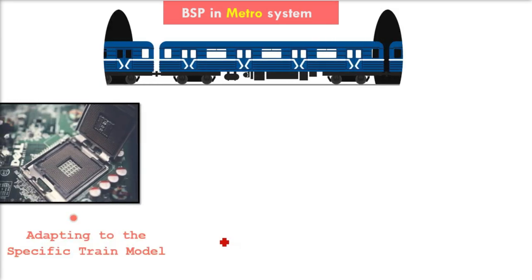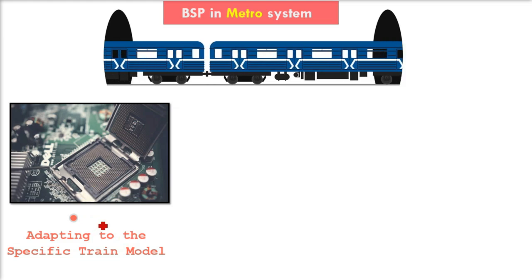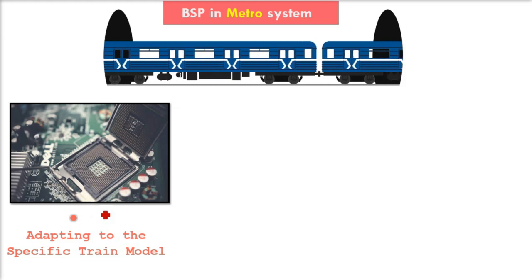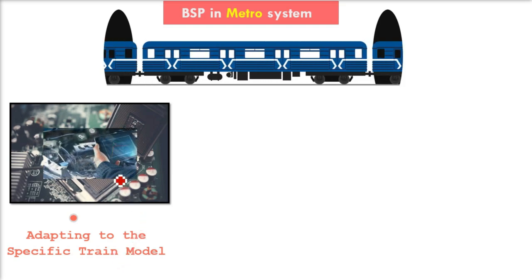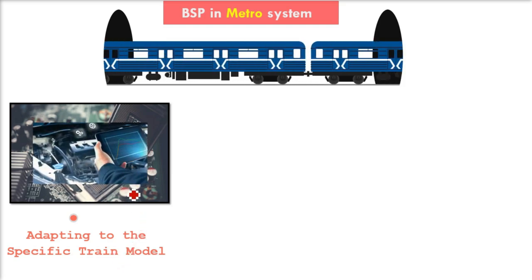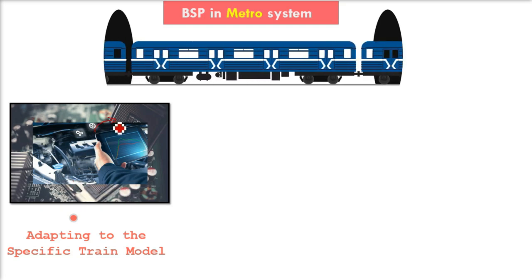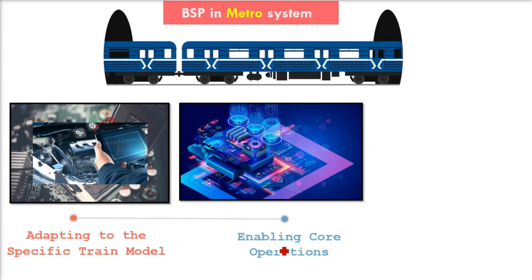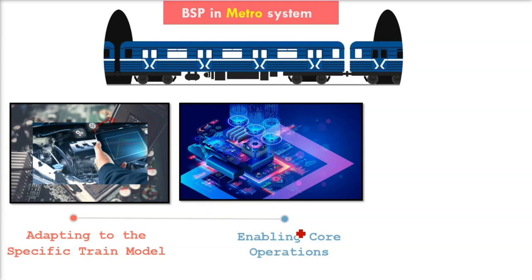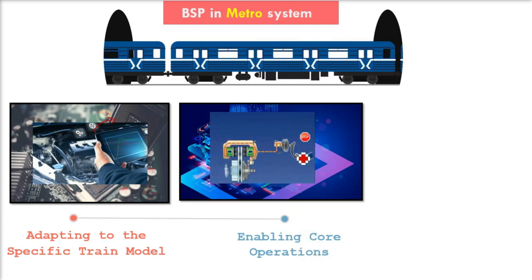Now take the example of a metro system and how a board support package plays a role. First, it adapts to the specific train model. Each metro train might have different hardware depending on its model. The BSP ensures the software knows exactly how to work with that specific train's hardware.